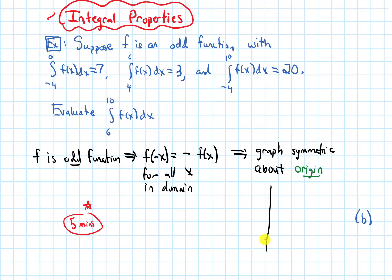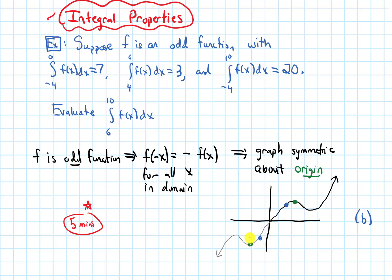Let me draw a sample picture. Whatever our graph looks like on one side of the origin, maybe it looks something like this — all of these points will be reflected across the origin and we end up with a graph like this. For example, this point over here got reflected across the origin, and here's its mirror image. This is an example of what an odd function's graph looks like.